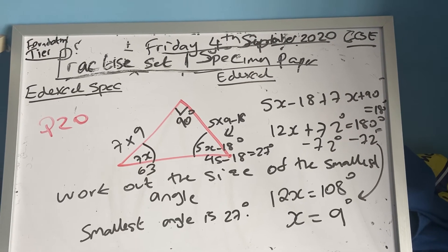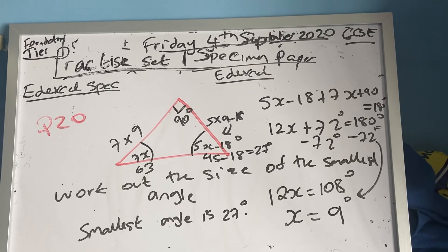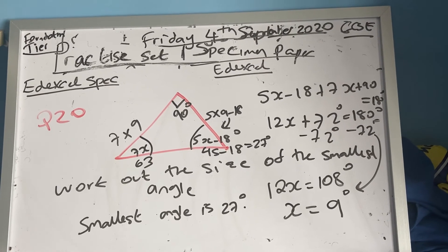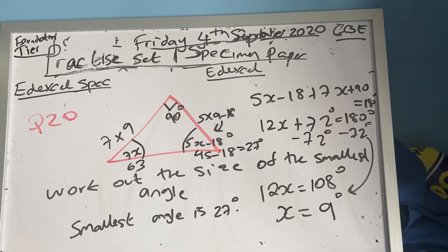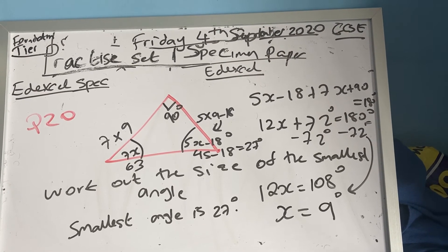Obviously if the numbers are bigger than 90 then 90 would be smaller. So 7 times 9 is 63, so 7x is 63, and then I've got 5 times 9 which is 45 minus